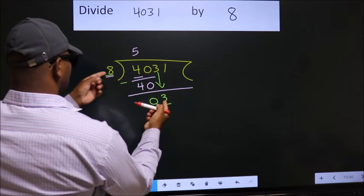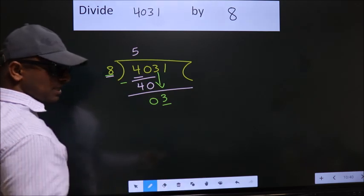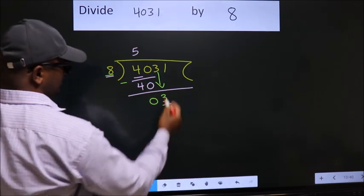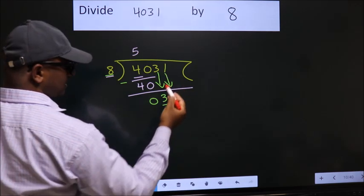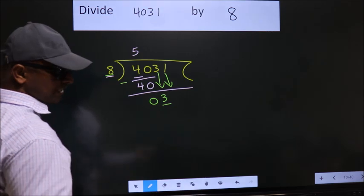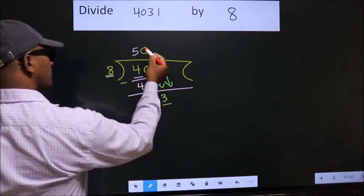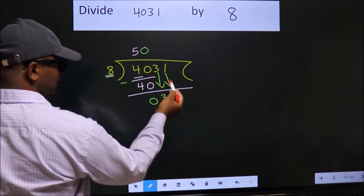3 is smaller than 8. So, we should bring down the second number. And the rule to bring down the second number is put 0 here. Then only we can bring down this number.